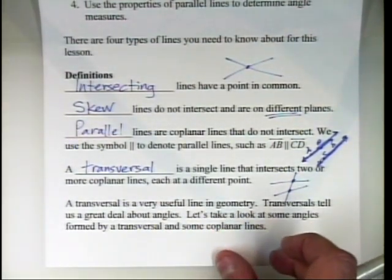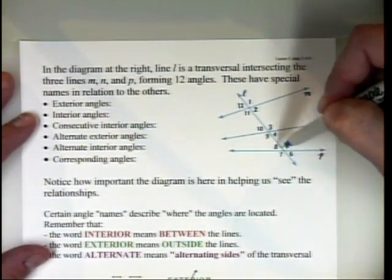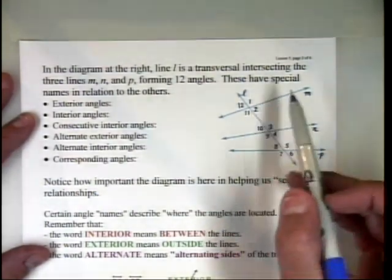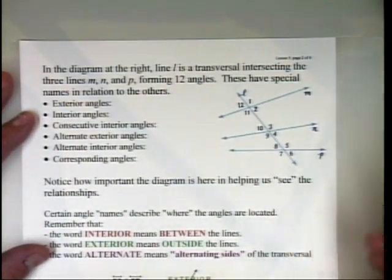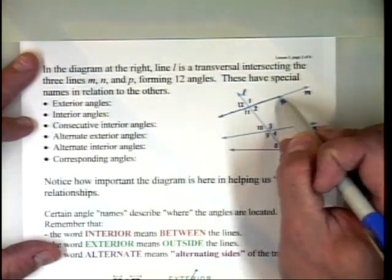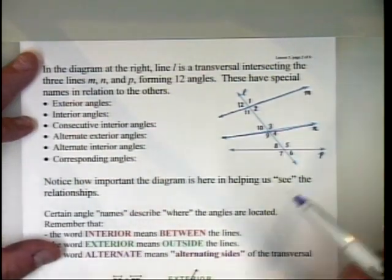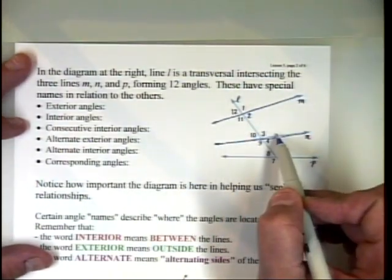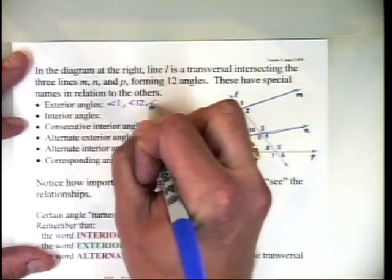In the diagram, we have line L as the transversal, which intersects three lines — M, N, and P — at three different points, forming 12 distinct angles. When looking at lines M and N, the exterior angles are on the outside of the two lines: angle 1, angle 12, angle 4, and angle 9. The interior angles are between the two lines: angle 2, angle 11, angle 3, and angle 10.